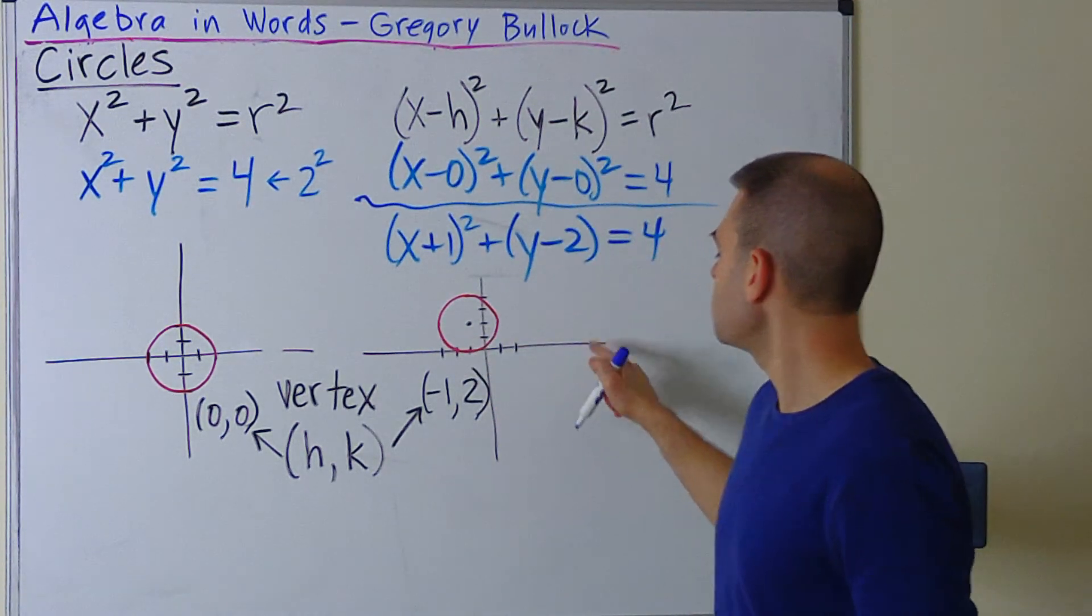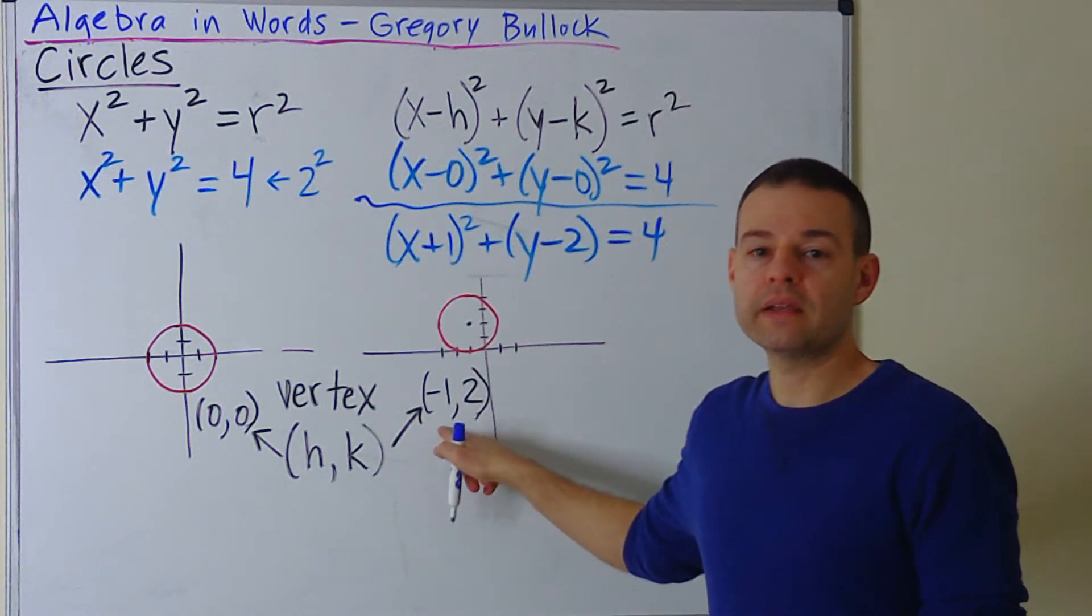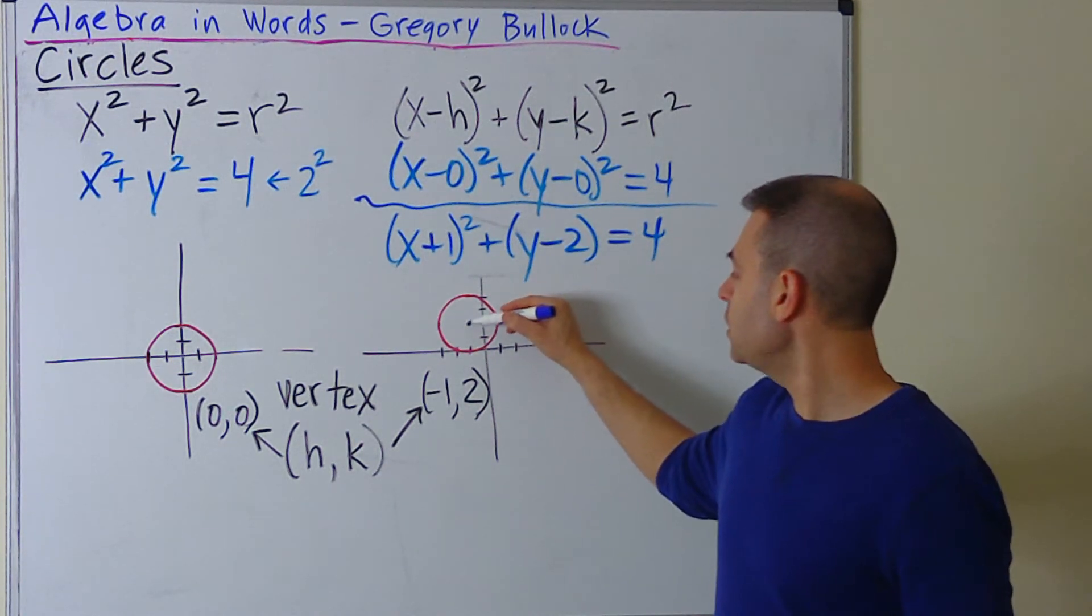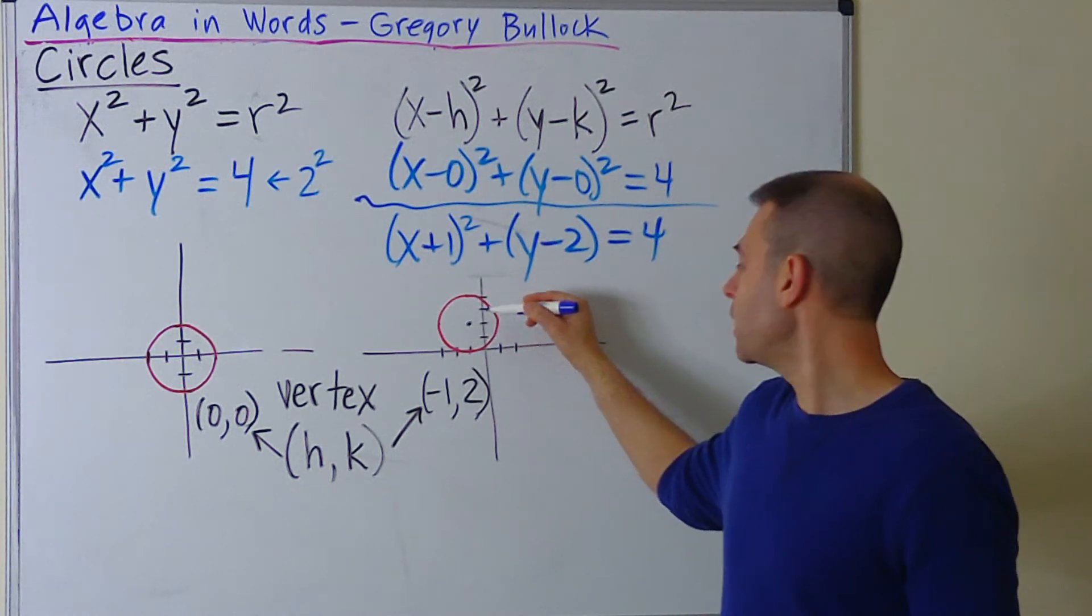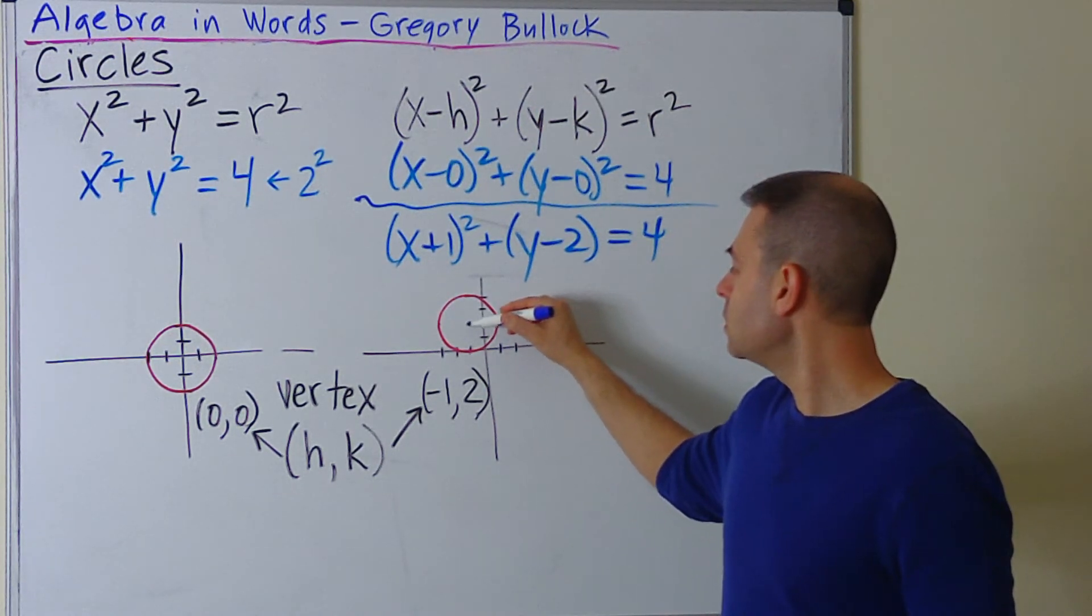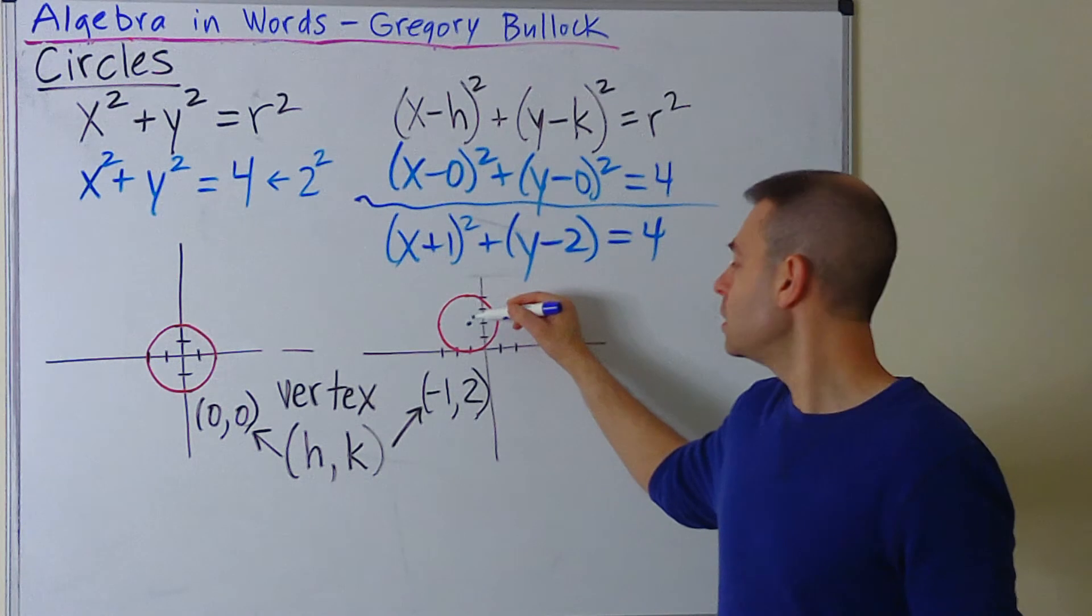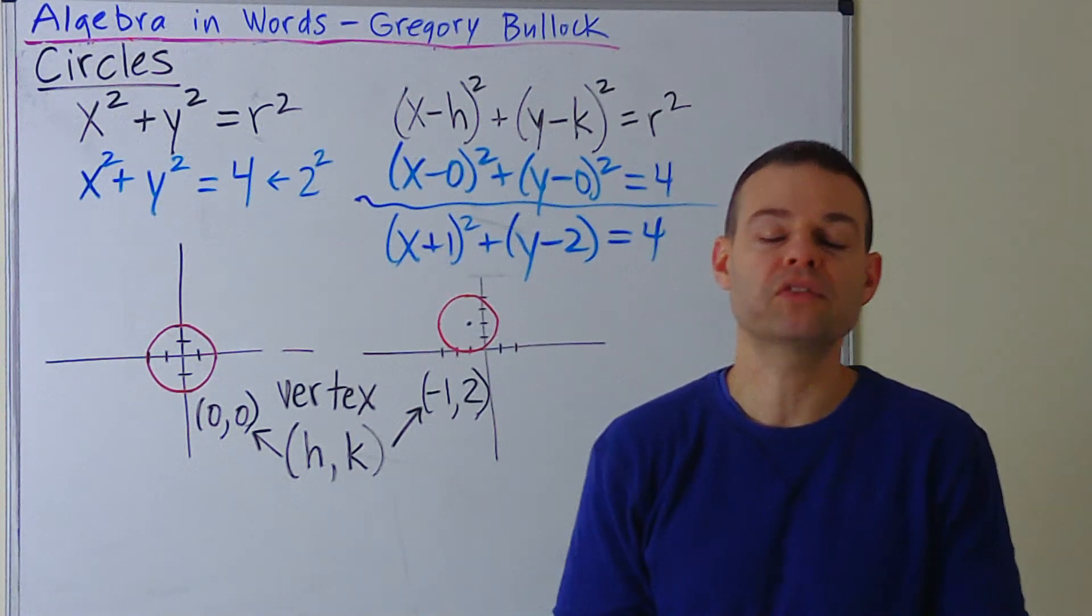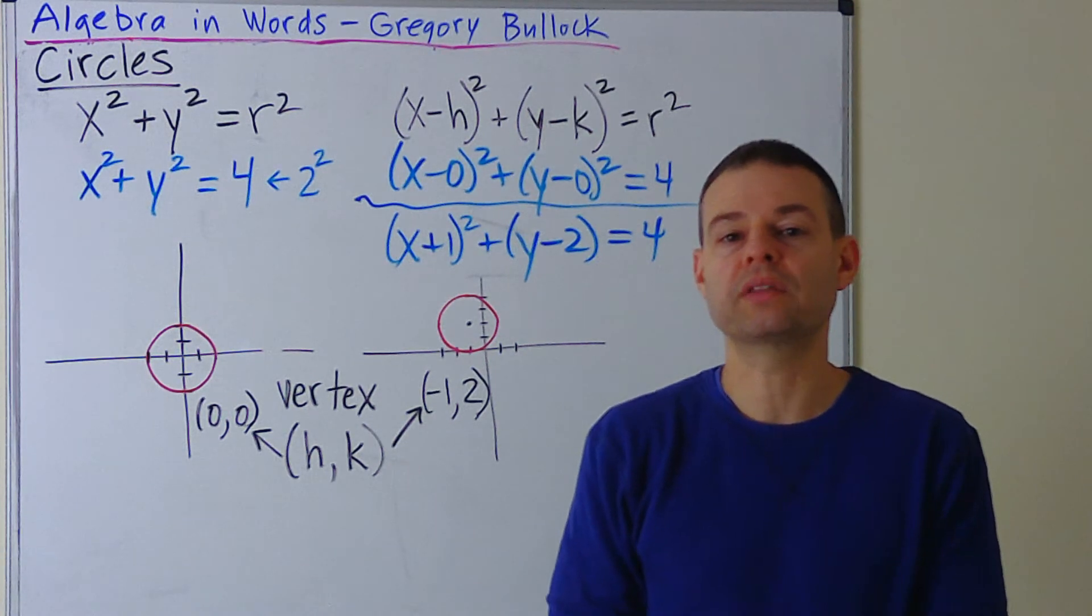Likewise with this, if we knew the vertex is (-1, 2), we would plot that first, and then starting here, we would go up 2 units, back to the middle, and then to the right 2 units, down 2 units from the center, and to the left 2 units from the center. Then we would connect the dots and draw the circle, and that's how we would get the circle.